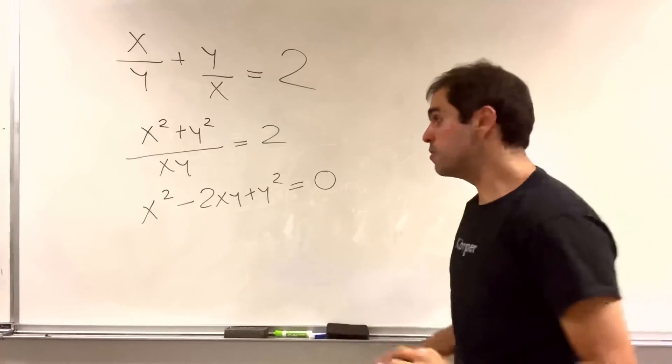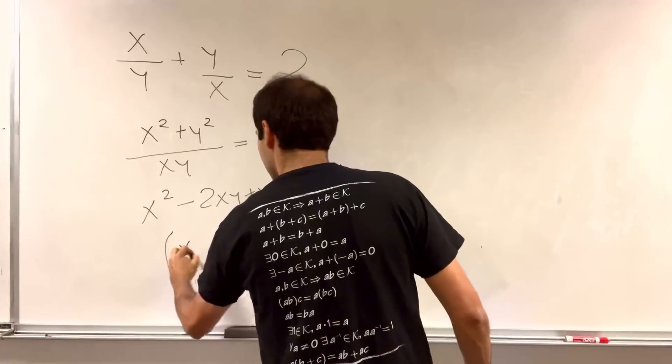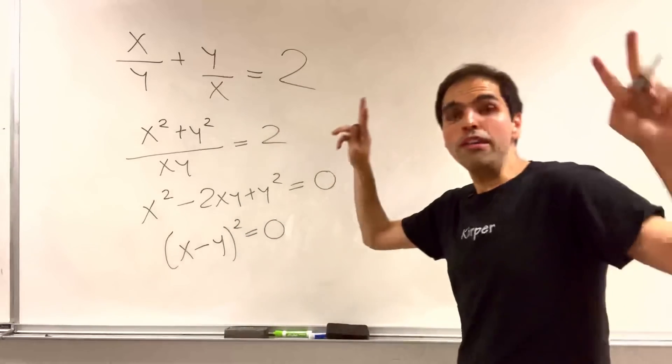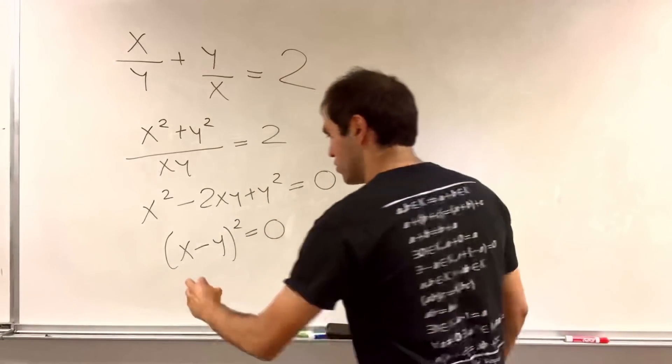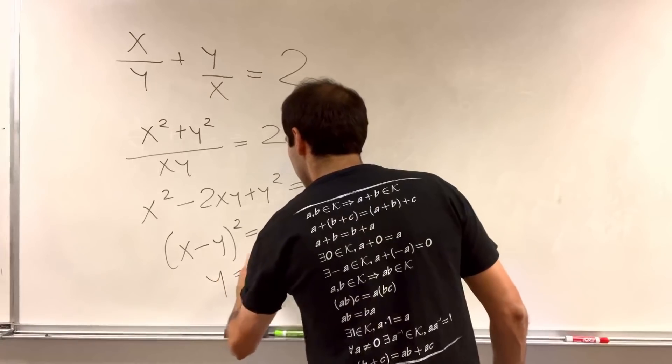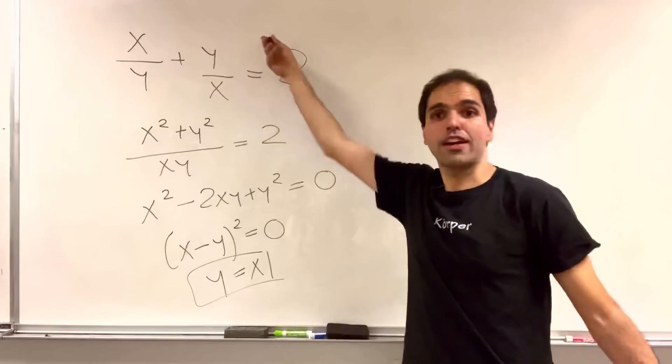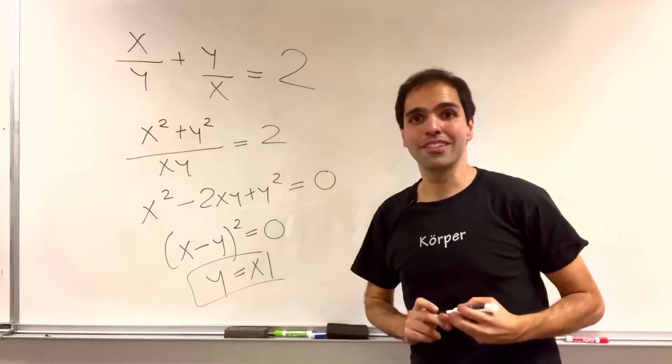Which now becomes a perfect square. So, x minus y squared equals 0. So, the only values that make this true is if y equals x. In fact, x over x plus x over x, that is true, too.